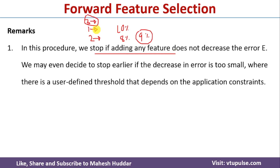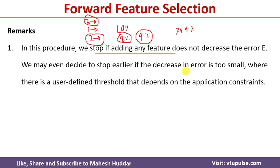Similarly, if after adding a feature the error decreases only marginally — for example from 8% to 7.999% — it is almost equivalent to 8%, so there is no benefit in adding that feature. The number of features at 2 is a better option in that case. If the error does not decrease, or decreases too little, we should not add a new feature.